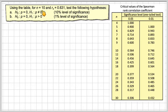Using the table for n equals 10 and rs, the Spearman's rank correlation coefficient, equals 0.631, test the following hypotheses. Part a: H0: ρ = 0, H1: ρ ≠ 0 at the 10% level of significance. Part b: H0: ρ = 0, H1: ρ > 0 at the 1% level of significance.